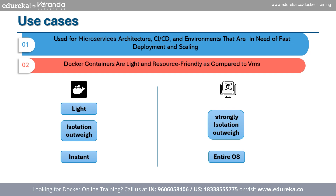Key differences: In terms of resource efficiency, Docker containers are lighter and more resource-friendly compared to virtual machines. Regarding isolation, virtual machines are much more strongly isolated, while Docker containers run on a shared host OS kernel but still achieve good isolation through namespaces and control groups. In speed of deployment, Docker containers can be started almost instantly, compared to the full OS boot time required by virtual machines.